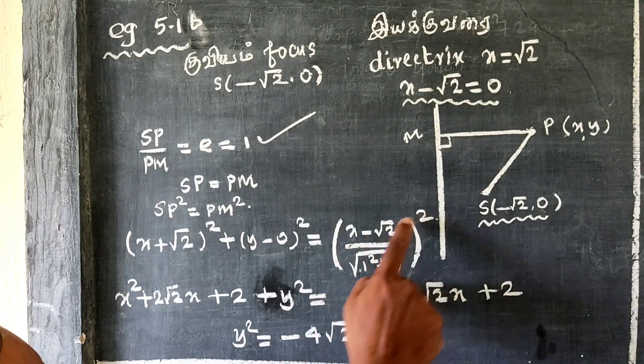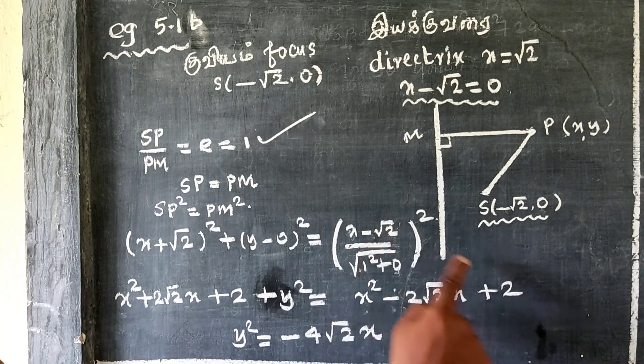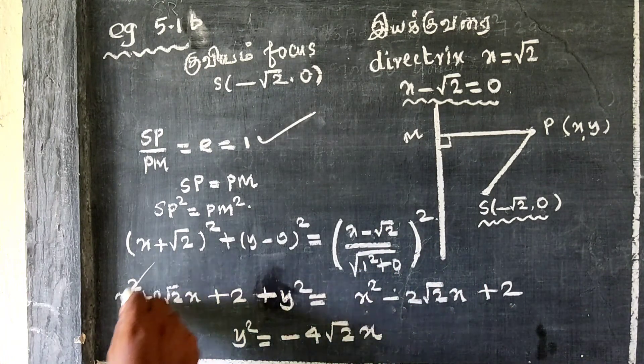The right side uses (a - b)² = a² - 2ab + b². Expanding gives x² - 2√2x + 2.